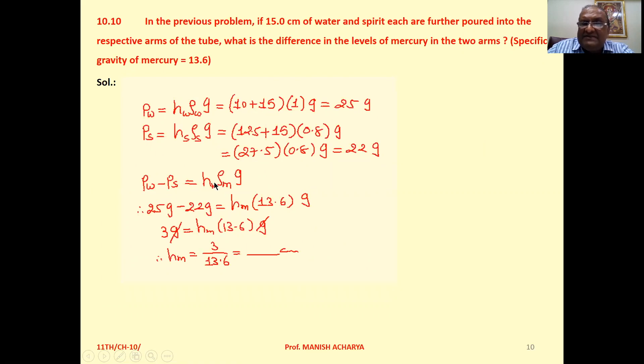P water minus P spirit, that is H mercury times rho mercury times G. Substitute the values: 25G minus 22G, that is H_m times rho_m times G. Now G cancelled from both sides, so 3 equals H_m into 13.6, so H_m that is 3 upon 13.6.